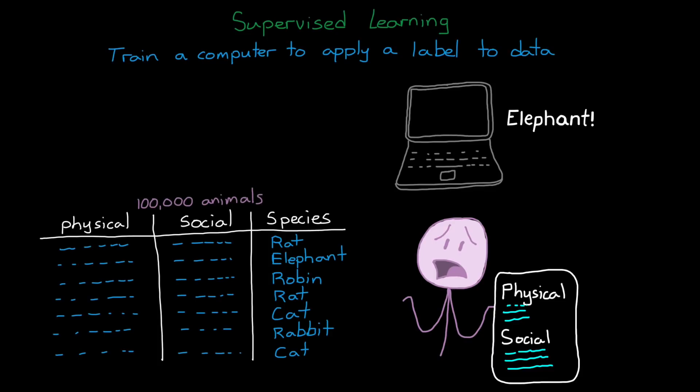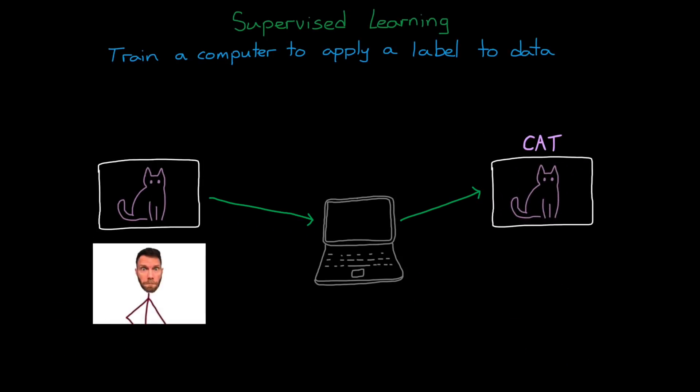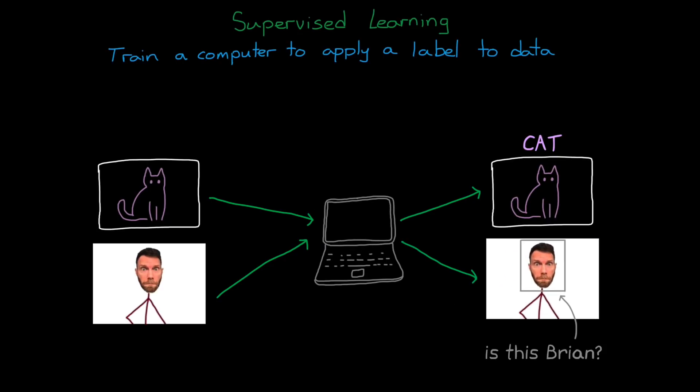And supervised learning is probably the type of machine learning that most people are familiar with, because it's what allows computers to recognize pictures of cats, or your friends in photos. And fundamentally, applying a label to an image is exactly the same problem as applying a label to a data set of animal features. We input a bunch of training images into the model, and then we tweak the model based on whether it guessed correctly or not, until it's accurate.